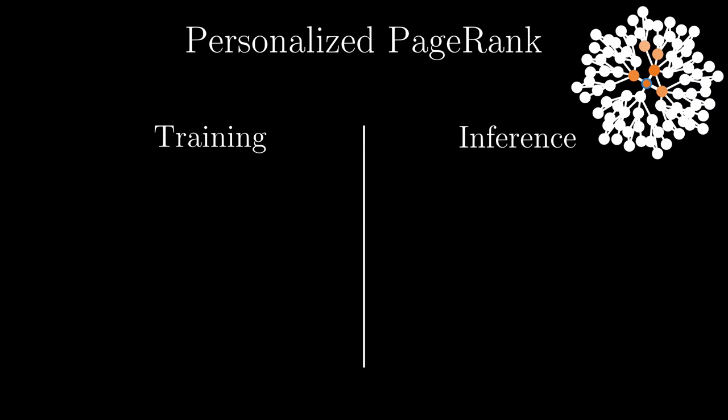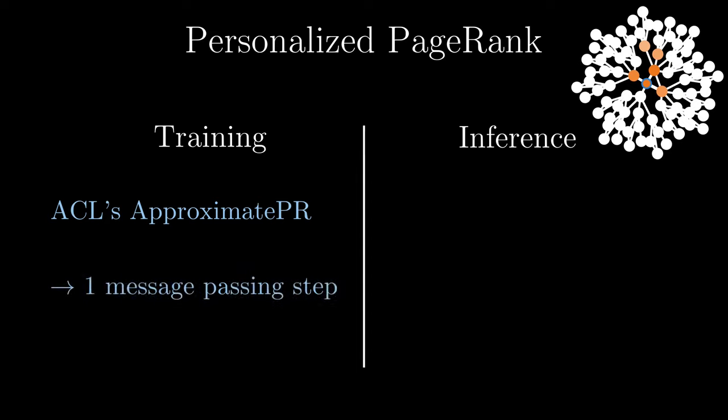For training, we precompute the required PageRank scores using an optimized variant of Anderson Chung-Lang's approximate PR. This algorithm is purely local and gives us very precise estimates for the training set. This enables us to do full propagation in a single message-passing step.